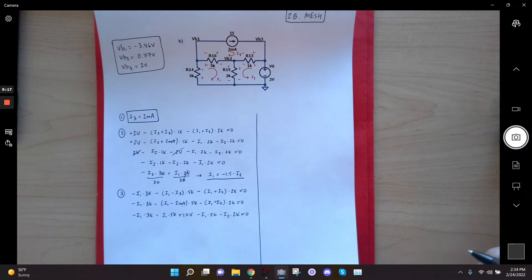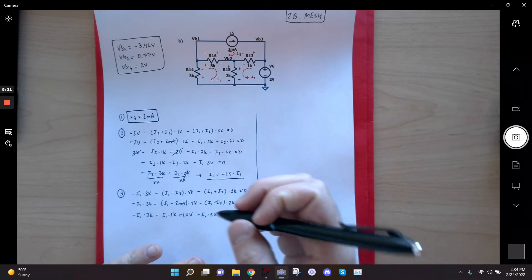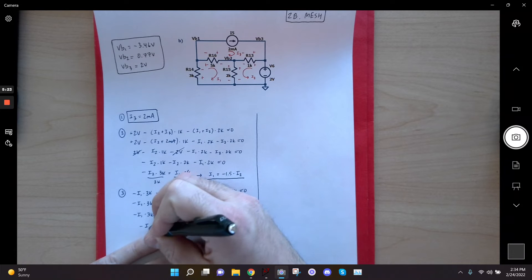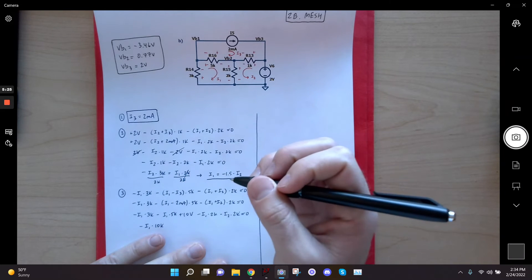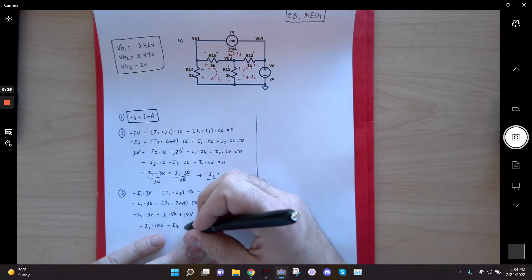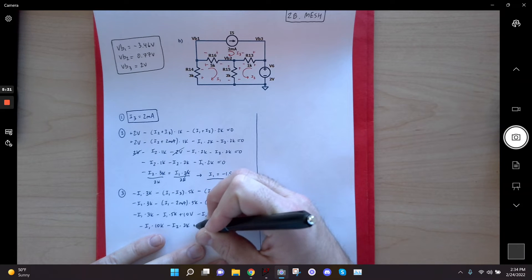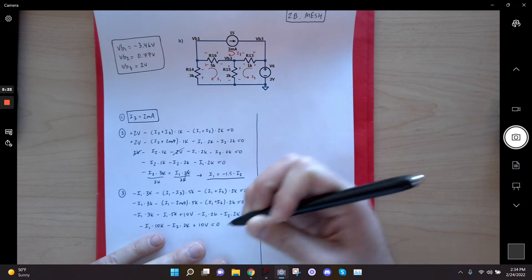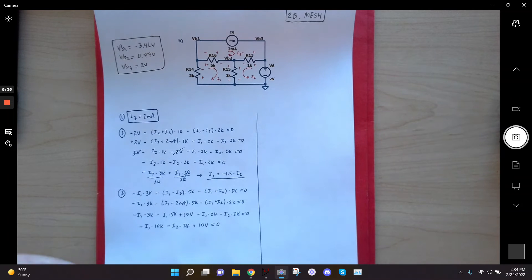Now I'm going to go ahead and group my like terms. So I've got a 3K I1, a 5K I1, and a 2K I1. So that gives me 10K, right? And then I've got a minus I2 times 2K. And I've got a plus 10 volts. All right.